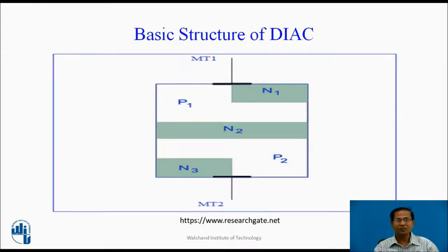Basic structure of Diac. Diac is a four-layer P-N-P-N device. MT1 is the main terminal 1 and MT2 is the main terminal 2.